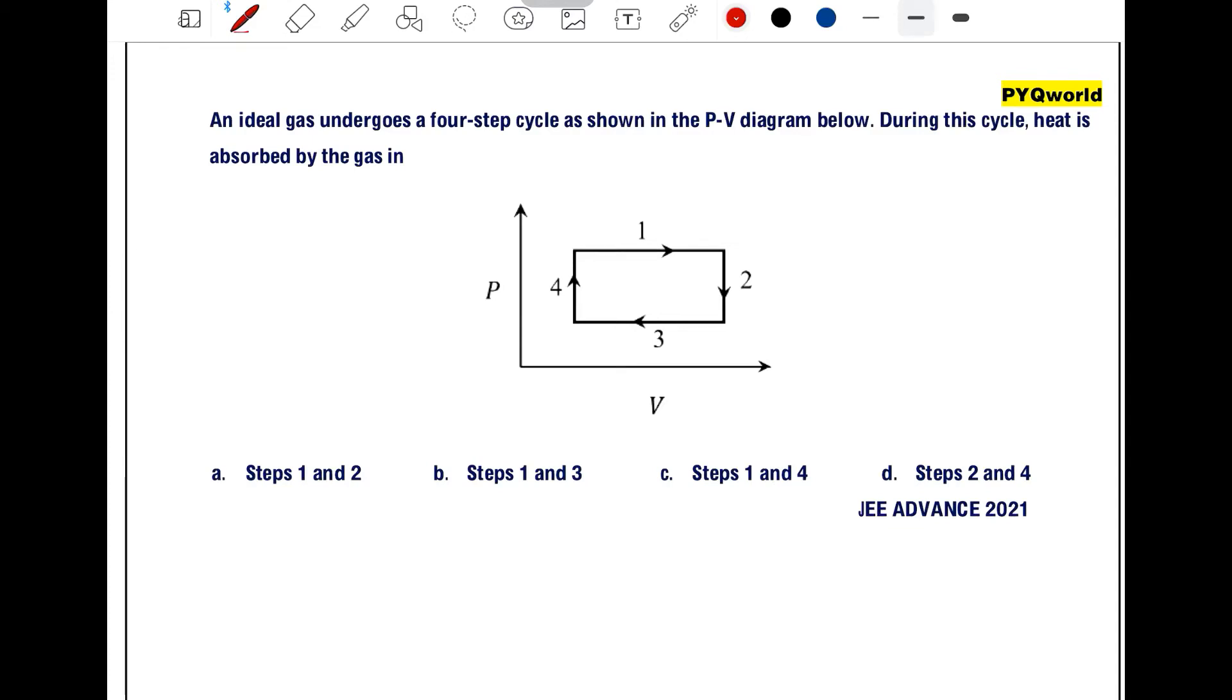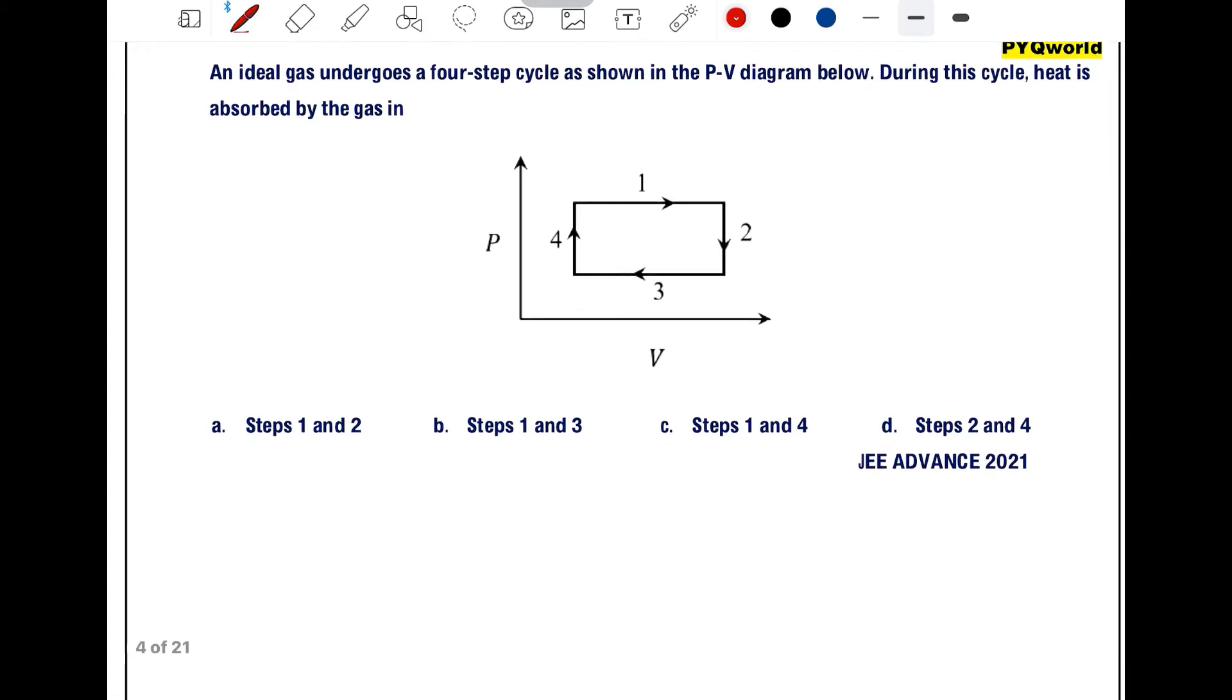An ideal gas undergoes a 4-step cycle as shown in the PV diagram below. During this cycle, heat is absorbed by the gas in certain processes. We are asked to find in which process the heat is absorbed by the gas.